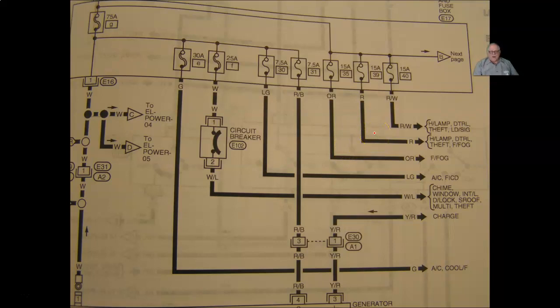For example, if you had an excessive parasitic drain, so your battery keeps going dead, you put your amp meter on there, and you find it's got 250 milliamps, instead of the 50 milliamps or less that you want to see, you pull out this 15 amp fuse number 40, and it drops down to 13 milliamps.